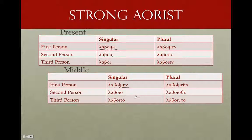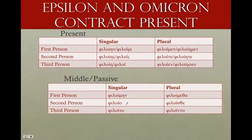The strong aorist has that rule of stem, theme vowel, iota, and ending. Now, contract verbs — epsilon-verbs — are a little dodgy.